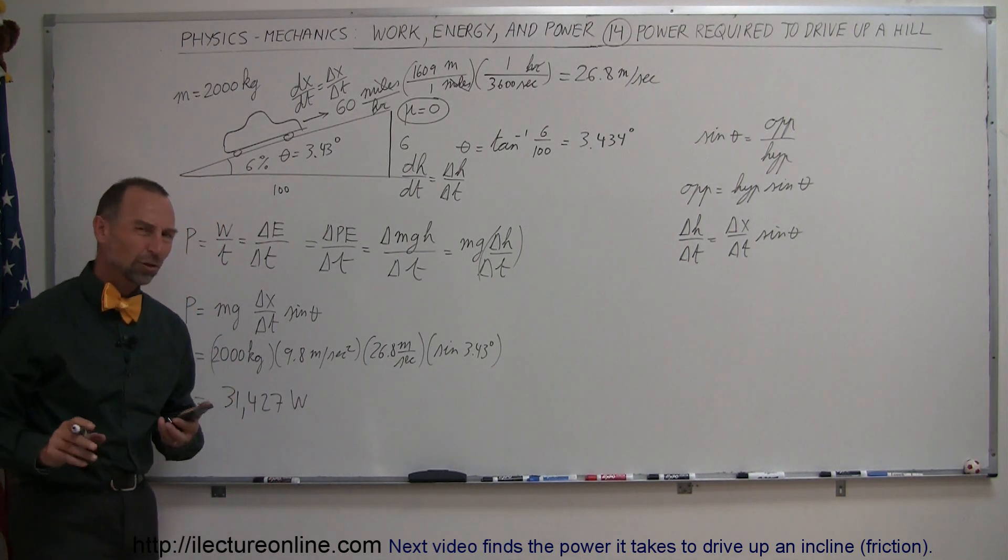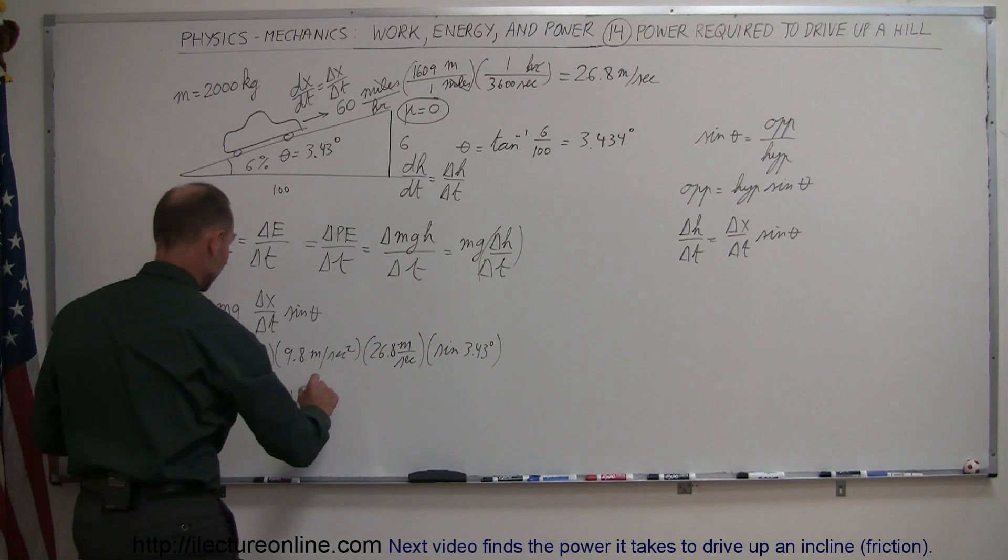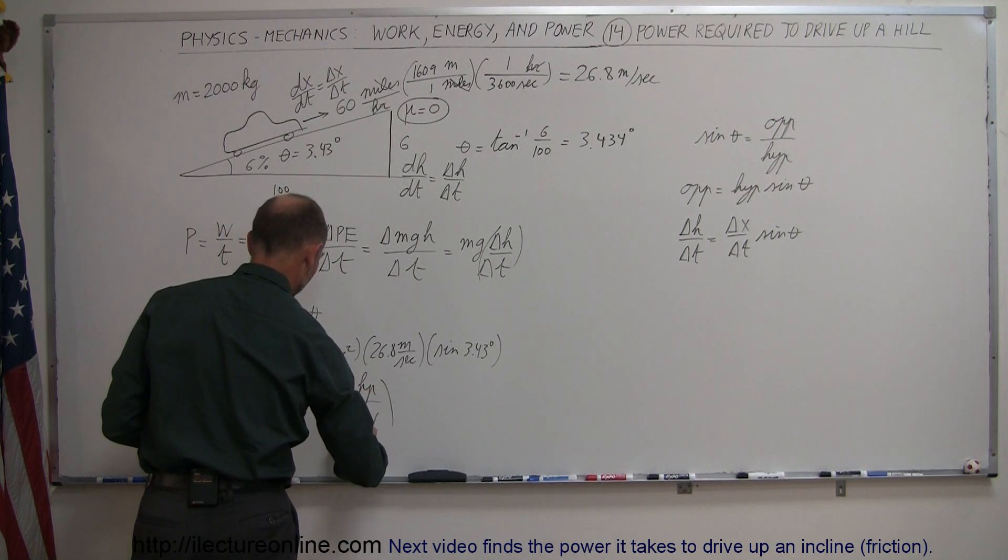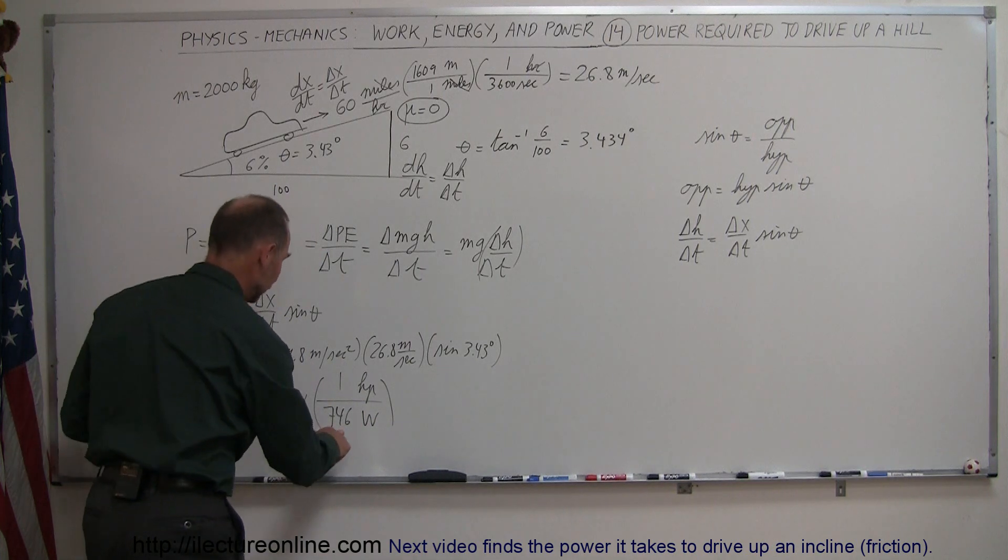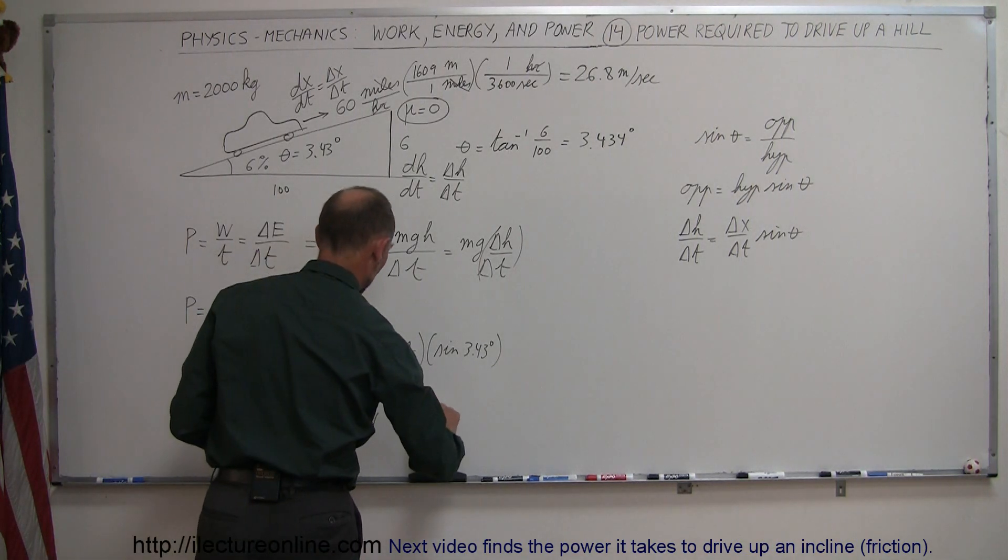Of course, we usually don't talk about watts in cars, we talk about it in terms of horsepower, so let's convert that to horsepower. Put horsepower at the top, watts at the bottom - one horsepower is 746 watts. So let's divide this by 746, and that would require 42 horsepower.